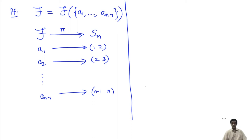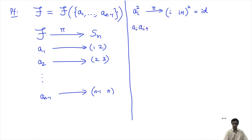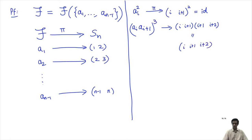The fact that we are mapping to transpositions implies: each ai² maps under π to the square of the transposition (i, i+1). Since a transposition has order 2, each ai² maps to the identity, so ai² is in the kernel. If we take consecutive elements ai · a(i+1), it maps to the product of two consecutive transpositions, which is a 3-cycle (i, i+1, i+2) whose cube is the identity.